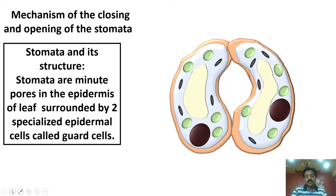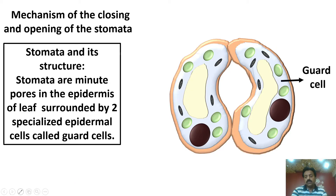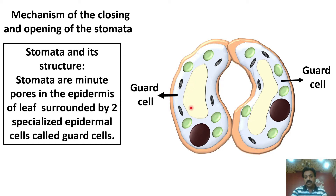Looking at the picture, this is one guard cell and this is the second guard cell. You have two guard cells. Each guard cell is kidney-shaped or bean-shaped.